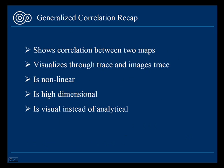Here is the summary of the generalized correlation. Generalized correlation characterizes the relationship between two maps. It basically extends the linear correlation into the high-dimensional nonlinear space. But unlike the linear correlation, the generalized correlation is visual instead of analytical. It does not immediately give us an analytical relationship, but shows the correlation in a series of patterns.